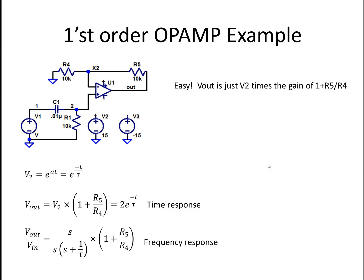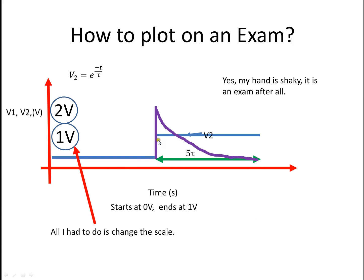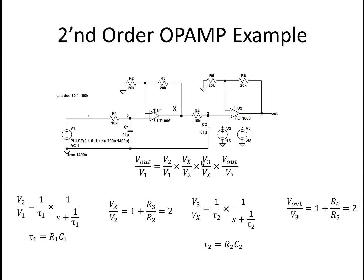Now let's start making it a little difficult. How about a first-order op-amp example? Well, this is easy, now that we've done the hard part, because this voltage here at node 2, multiply it by the gain of a non-inverting amplifier, you get Vout. So V2 is what we had before, this exponential decay. Vout is V2 times the gain, which is now 2. You still have the frequency response? Multiply by 2. Well, when we plot it, now the big difference is the step goes up to 1 volt, but the output jumps to 2, and then exponentially decays in 5τ. All I had to do was change the scale.